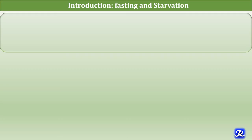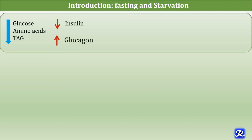Fasting begins if no food is ingested after the absorptive period, that is 2 to 4 hours after a meal, and if it is prolonged more than 2 days it is called starvation. In the absence of food, plasma levels of glucose, amino acids, and triacylglycerol fall, which triggers a decrease in insulin and an increase in glucagon release.